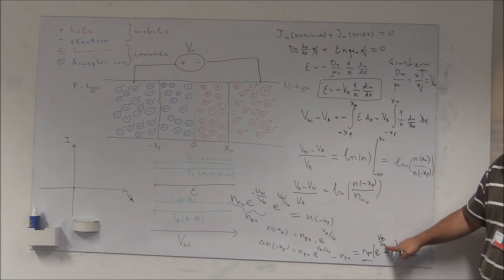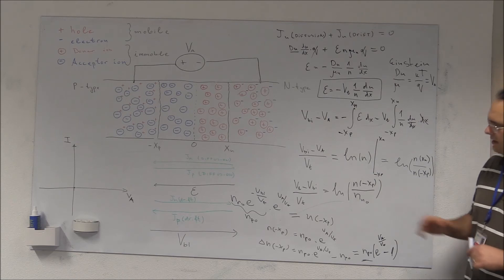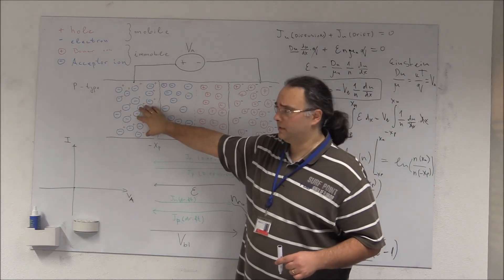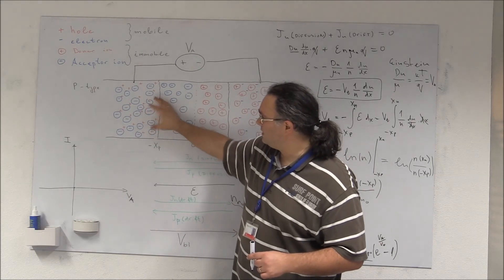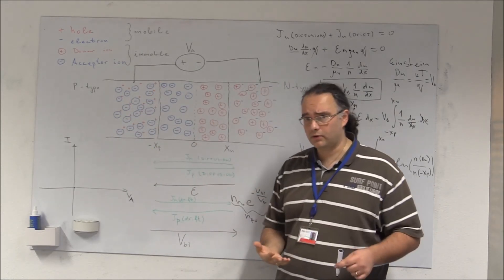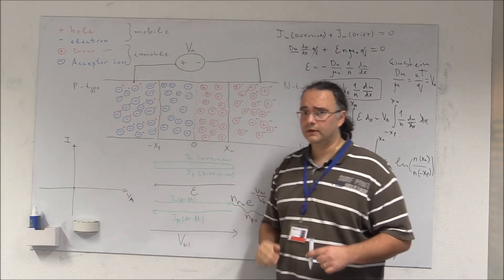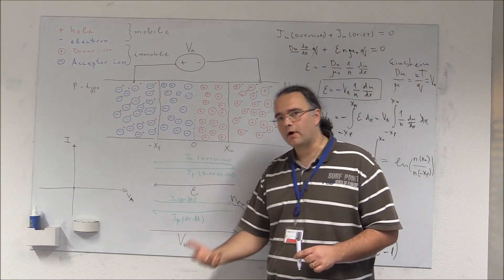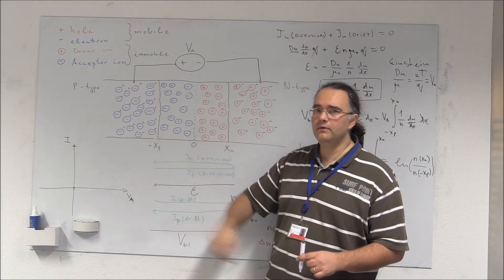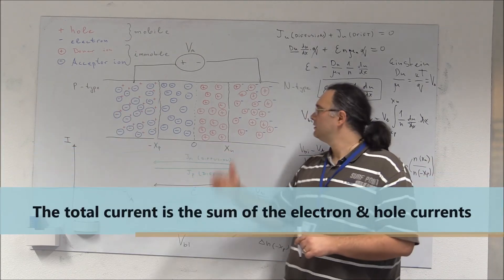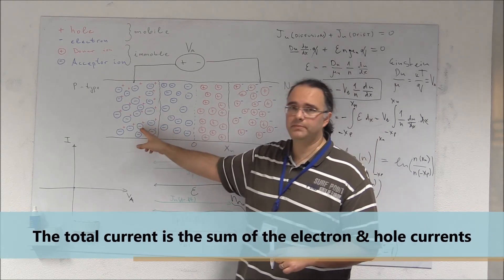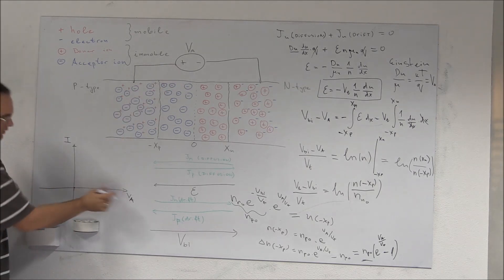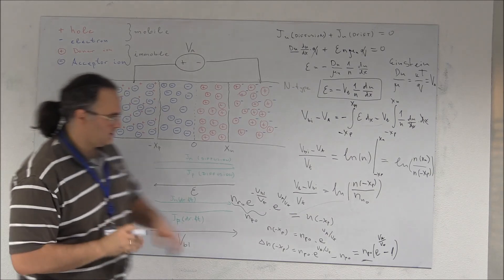These injected excess electrons, now minority carriers in the P-type material, will diffuse into the P-type, recombine with holes, and thereby create current. The more we inject, the more current we create — so exponentially injecting more minority carriers leads to exponentially increasing current. For positive voltages Va, the current increases exponentially.